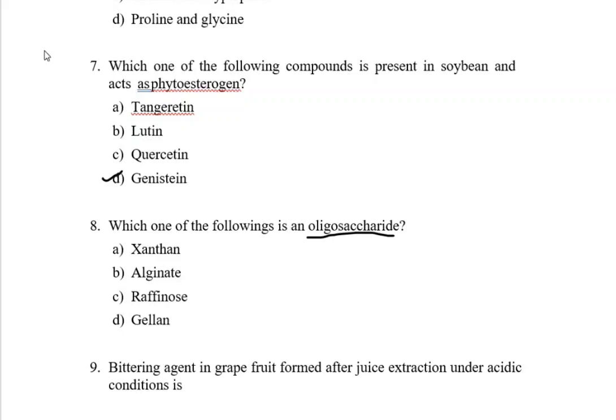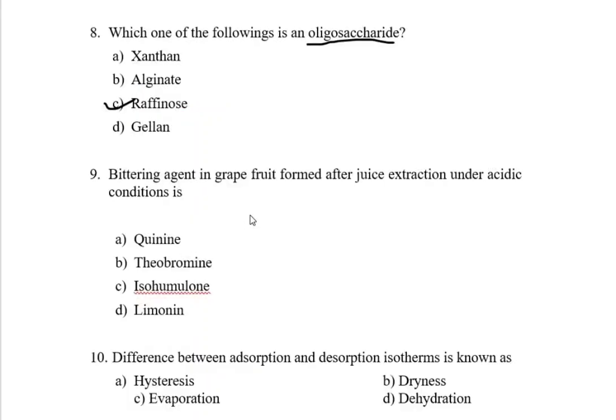Next question: bittering agent in grapefruit formed after juice extraction under acidic conditions is—option A: quinine, option B: theobromine, option C: isohumulone, and option D: limonin. Quinine contained in tonic water gives bitter taste.